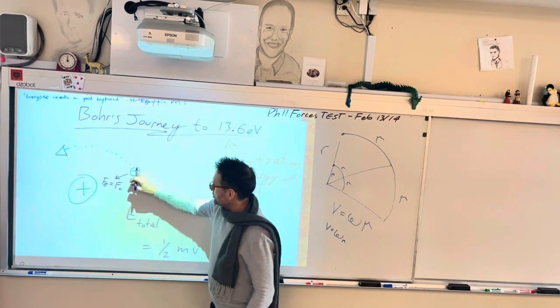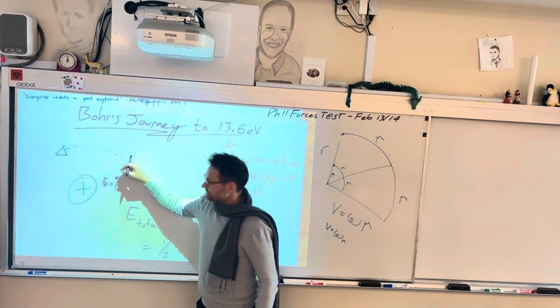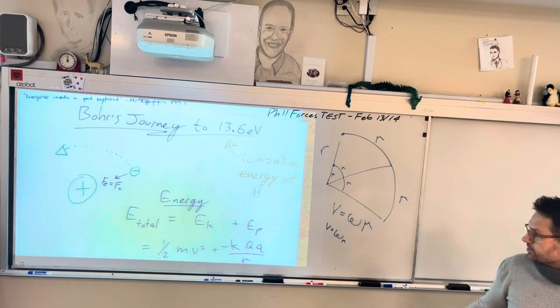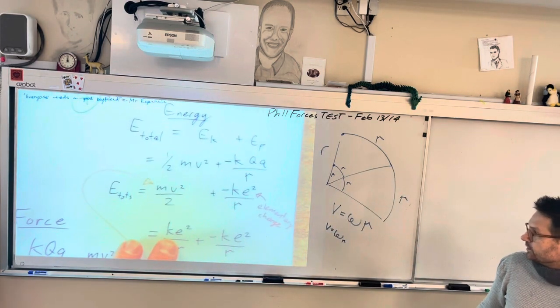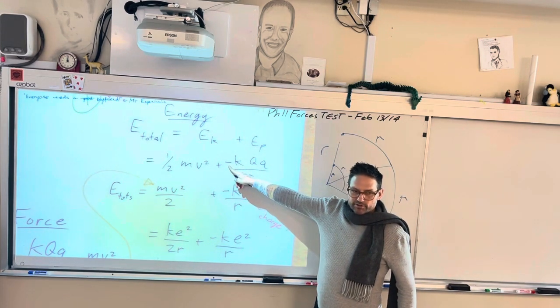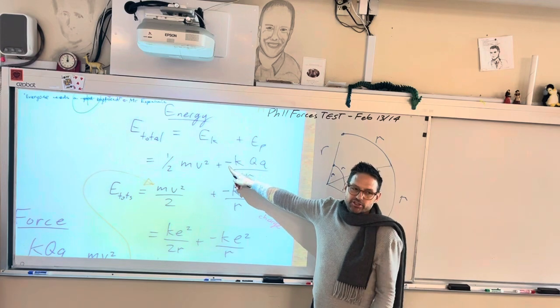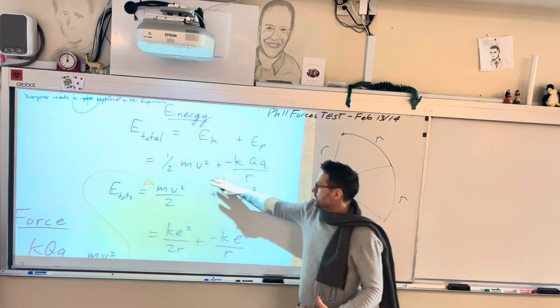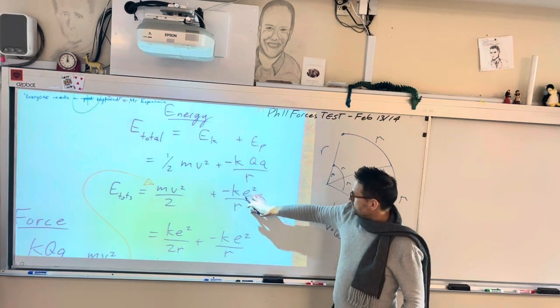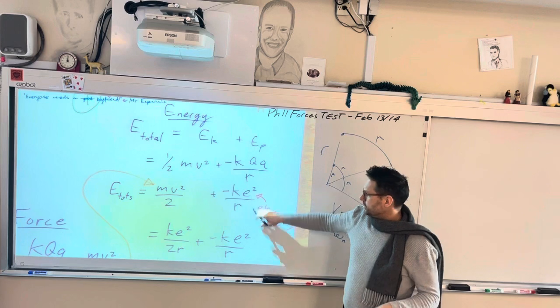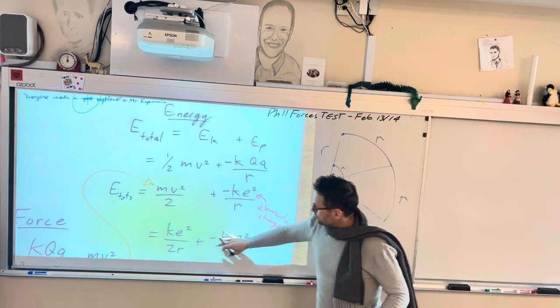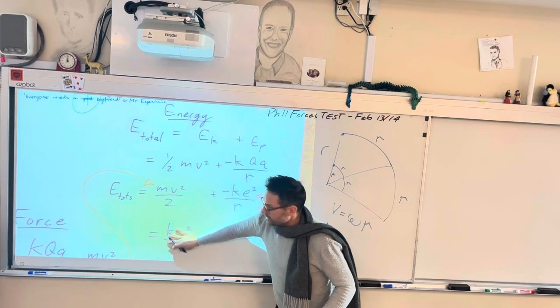Bohr was thinking of the electron as an orbiting mass. And he starts first with energy. Total energy is kinetic energy plus potential. This is electrostatic potential energy. We have to keep the negative because this is an attraction, so it's a negative potential energy. Half mv squared. Change these to this. E is the elementary charge, because proton and electron have the same charge.